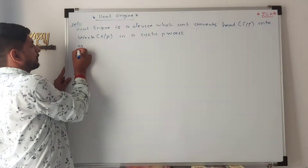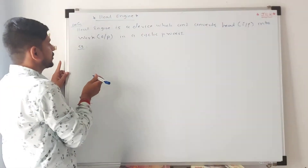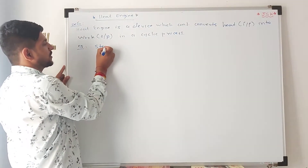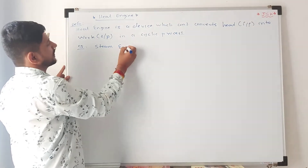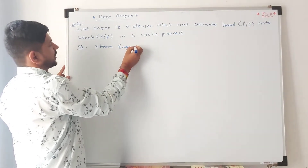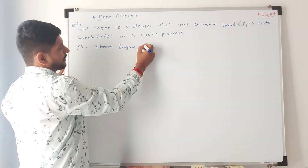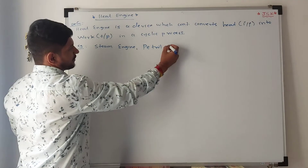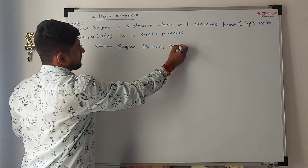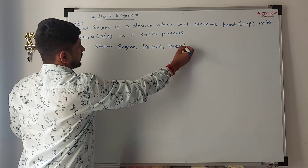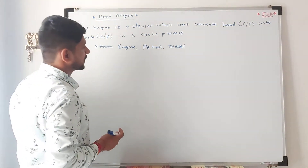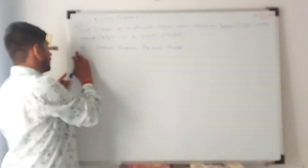For example, practical heat engines include the steam engine, petrol engine, and diesel engine. So these are all practical heat engine examples.